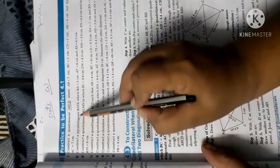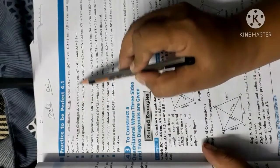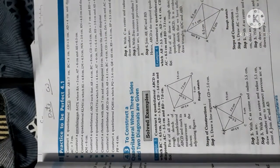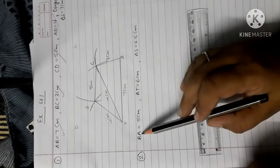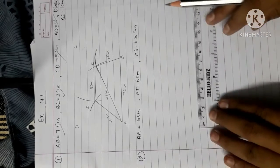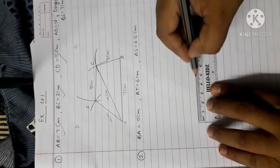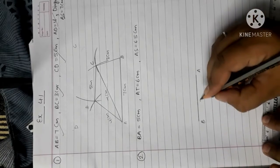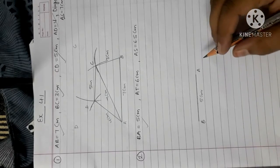Now question number 2. Read the question: construct a parallelogram BATS in which BA equals to 5 cm, AT equals to 6 cm, and AS equals to 6.5 cm. Here we make a parallelogram. First of all, BA equals to 5 cm, so make here a 5 cm line. Draw here and lay down here — BA equals to 5 cm.